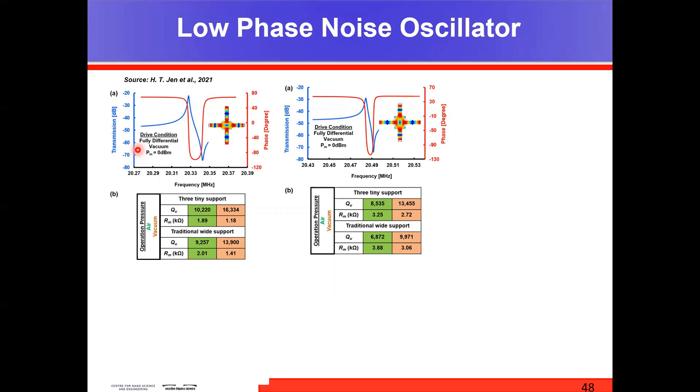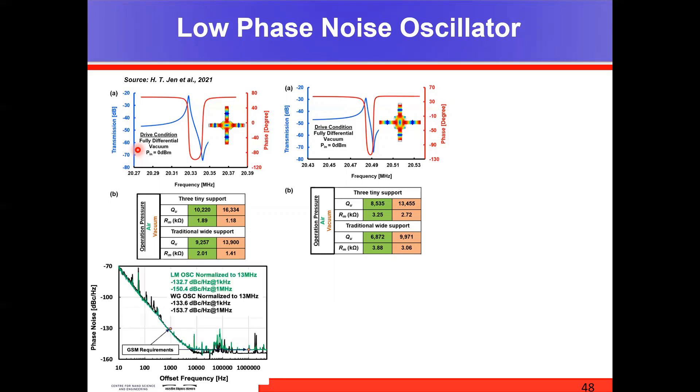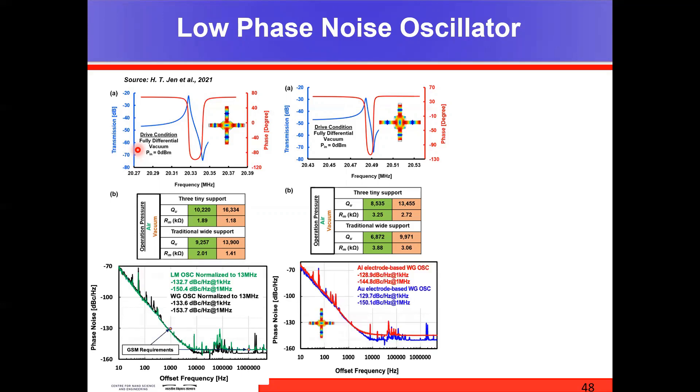An optimized oscillation system in this particular work was realized using the LNA as I mentioned. By carefully positioning the passive components such as couplers and attenuators, an ideal operation point for the resonator was attained. Using this scheme, wine glass and lame mode resonator based high performance oscillators with extremely low phase noise have been attained, as you can see over here.